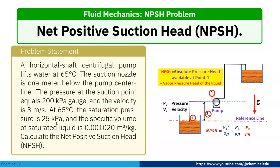Calculate the net positive suction head NPSH. Now, here the suction nozzle is here. The velocity is 3 meters per second and the suction nozzle is 1 meter below from this pump. So, from here to here ZA, that distance is 1 meter, and the pressure is 200 kPa gauge and saturation or vapor pressure is 25 kPa. Now, you have to find out what will be the net positive suction head.